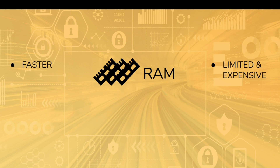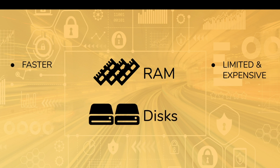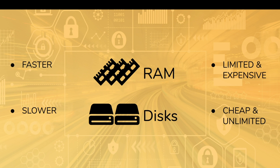RAM is much faster but it's limited and expensive. You might have a two terabyte hard drive on your computer, but there's no way you have two terabytes of RAM — you have a limited amount, maybe eight gigabytes. Hard disks, conversely, they're slower, but they're cheap and virtually unlimited. You can go buy a new hard disk, plug it in. Even if you have a laptop with limited space, you can plug a drive into a USB port and get additional space that way. So disks are cheap but slower — there's a trade-off, and the trade-off continues in both directions.